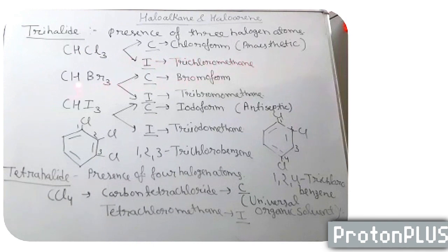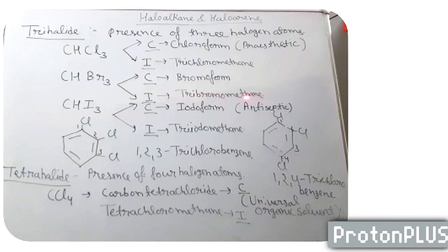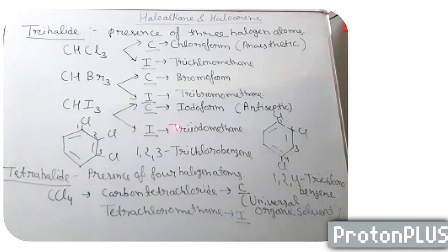Next, we will take CHI3, that is iodoform, used as antiseptic. IUPAC name is triiodomethane.